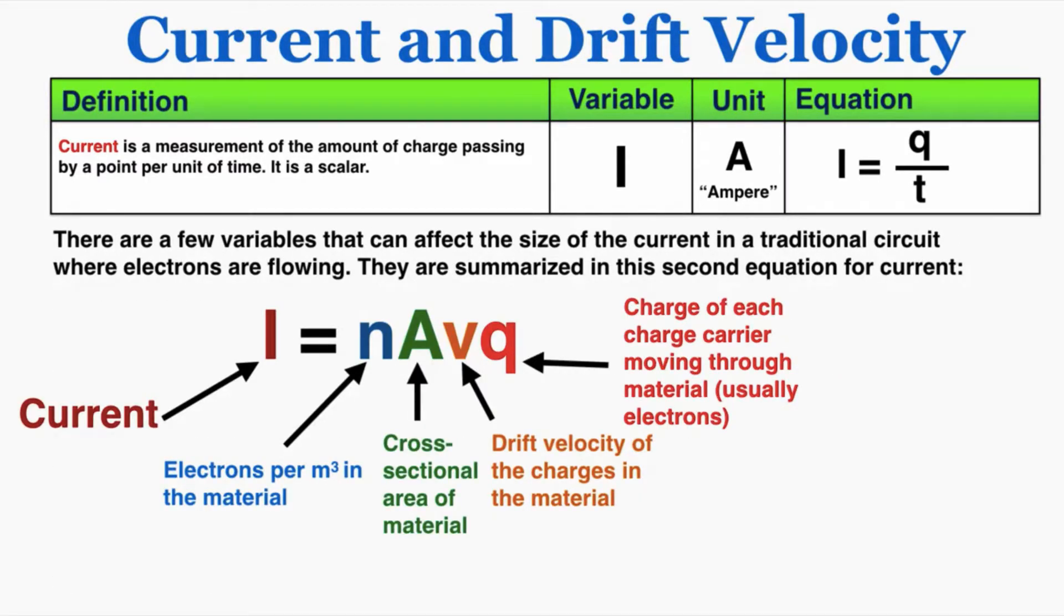There are a few variables that can affect the size of the current in a traditional circuit where electrons are flowing. They're summarized in this second equation for current. So current can be equal to the electrons per meter cubed in a material times the cross-sectional area of that material times the drift velocity of the charges in the material. And drift velocity is just a complex name for saying how fast the charges are moving in that material, times the charge of each carrier moving through the material. That's almost always going to be electrons, because electrons are the only real carriers of charge in most materials.